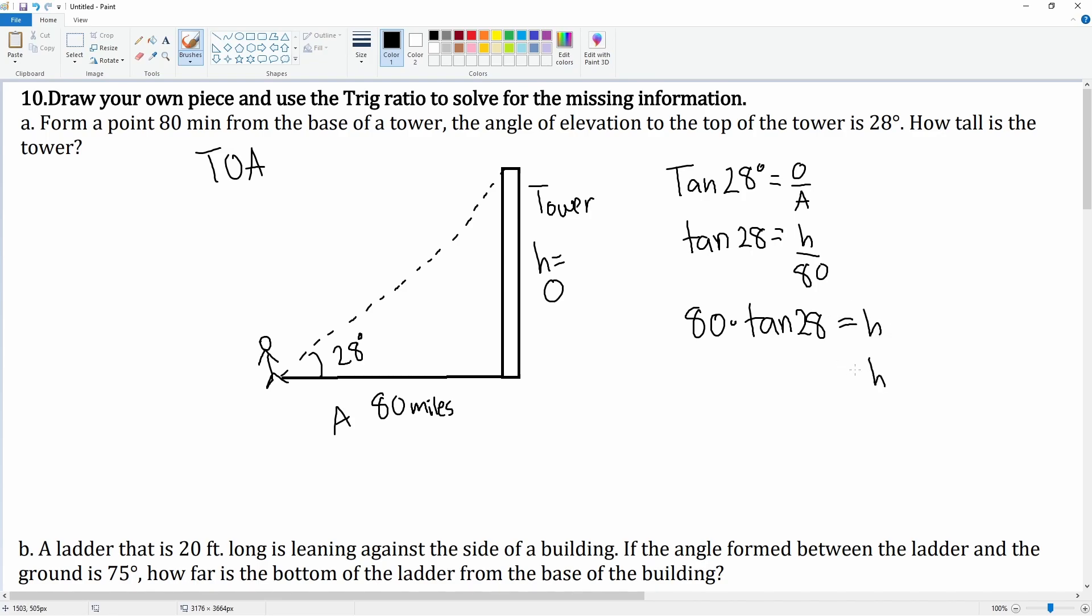So we can now plug this into a calculator to get an approximation. 80 times tan 28 which is 42.5 if I round it to the nearest tenth. The units should have been miles, so it's 42.5 miles tall.